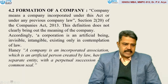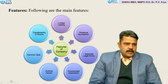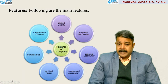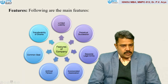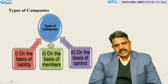A company is an incorporated association which is an artificial person created by law, having a separate entity with a perpetual succession and a common seal. The main features of a company involve: limited liability, perpetual succession, it is a separate legal entity, incorporated association, it is an artificial person, common seal, and transferability of shares. These are the main features by which we can identify and relate to the company.